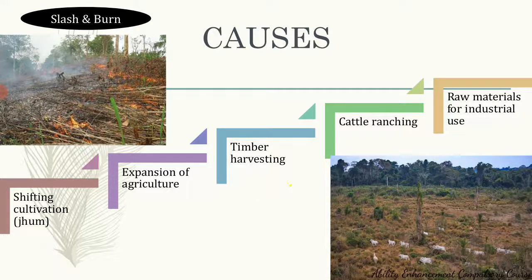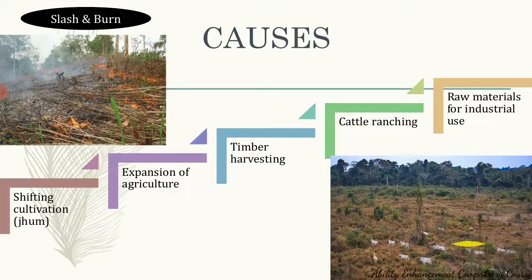Another contributor to deforestation is timber harvesting. There is extensive timber harvesting done for construction purposes, and firewood is collected on a large scale. Cattle ranching also contributes to deforestation, especially in South America and Central American countries, where large farms are created for breeding cattle — as seen in this picture from the Brazilian rainforest which has been cleared to raise cattle. Finally, several raw materials required from forests are used for industrial purposes, which contributes to cutting down forests on a very large scale.